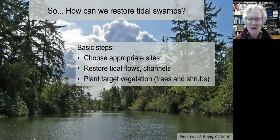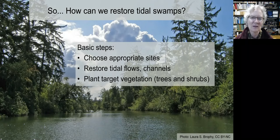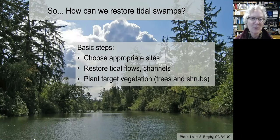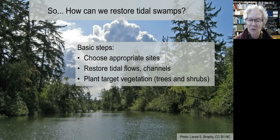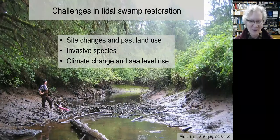With these high functions and the nearly complete loss of our tidal swamps, we want to restore these habitats in the northwest. To do that we follow the same basic steps used for other tidal wetlands: choose an appropriate site, restore tidal flows and channels, and plant target vegetation — in this case trees and shrubs. But there are some unique issues and challenges for tidal swamp restoration. These are the top three issues we're facing, and I'll cover them in the next few slides.